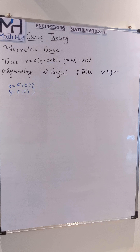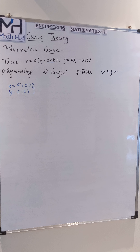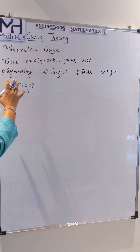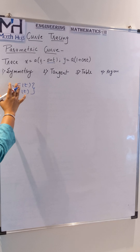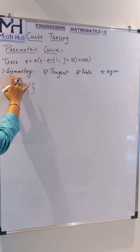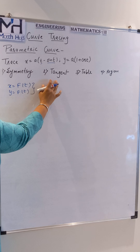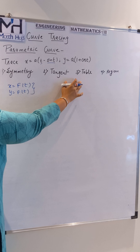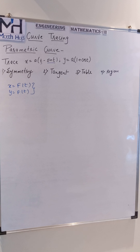Whenever we trace a curve — whether it is Cartesian, polar, or parametric — we always need some information to trace the curve. We need that information in the form of points. So to trace the curve, we need to find: symmetry, tangent, a table of values, and the region where the curve exists.